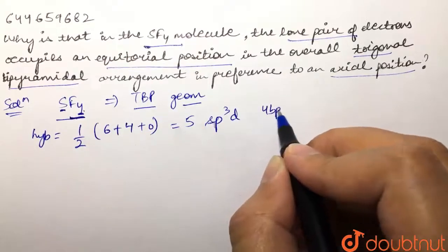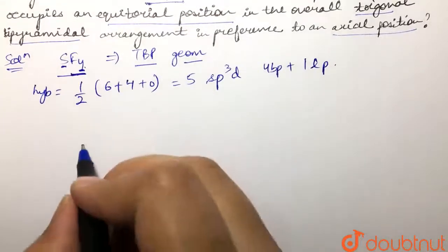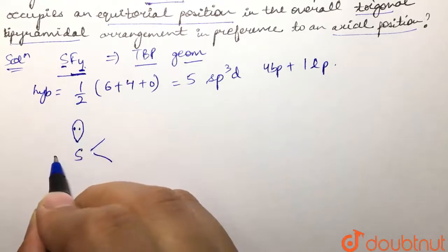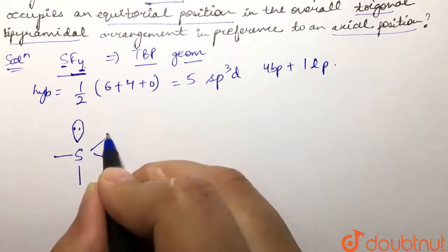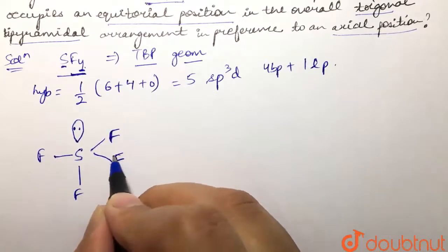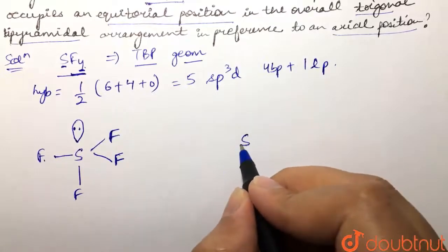So there are two possibilities of SF4 structure. We can have first a lone pair present at axial position, with fluorine atoms present like this - three fluorines at equatorial position and one fluorine at axial position.